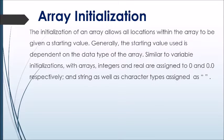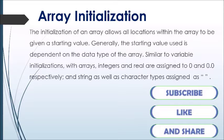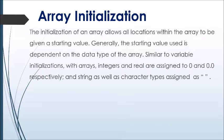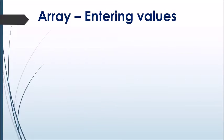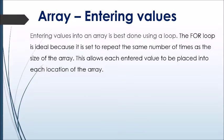Array initialization: the initialization of an array allows all locations within the array to be given a starting value. Generally the starting value used is dependent on the data type assigned to the array. Similar to variable initializations, arrays associate integer and real data types to the value zero and 0.0 respectively; string and character data types are assigned an empty space. The following example shows a for loop header with counter variable x, and starting and ending values. Each element of the array 'empID' is assigned an initial value with each iteration. Once all iterations are complete, all locations contain a starting value. The keyword 'end for' shows termination of the loop.